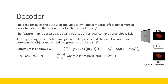The decoder takes in the spatial and temporal transformer information — YS and YT — in order to estimate the lesion mask. The feature maps are upscaled using residual convolutional blocks. Once upscaling is complete, binary cross-entropy loss and dice loss are used, and the training tries to minimize those between the object mask and the ground truth labels. The authors did not provide much information about the decoder in the paper, and I had to look for that information separately.